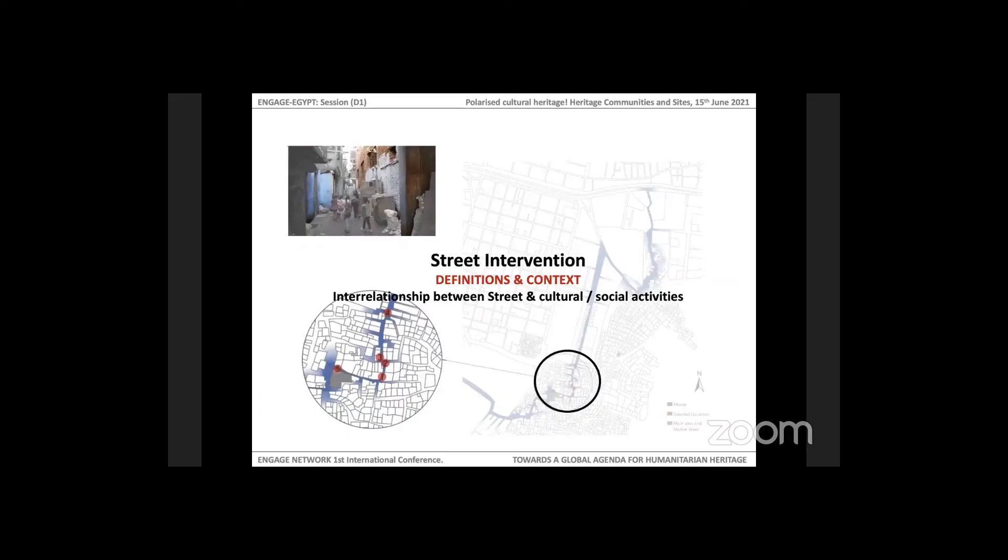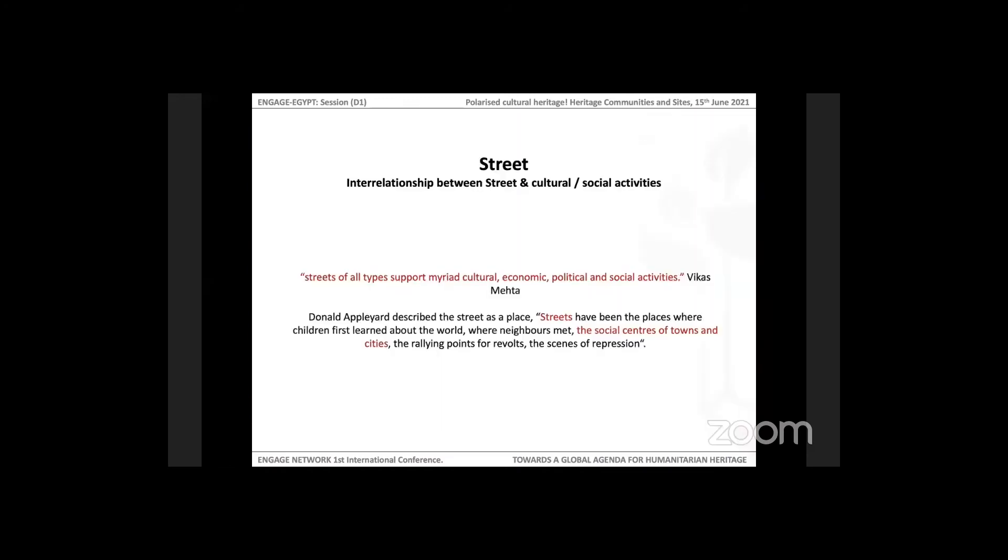I'm going to present more in depth the street intervention as an example of how we identify the cultural features and community heritage. Of course, the financial limitations of the project limit our case to a small-scale project. In the street intervention, we redefined the street in terms of its function and features. We studied the interrelationship between streets and culture and social activities.